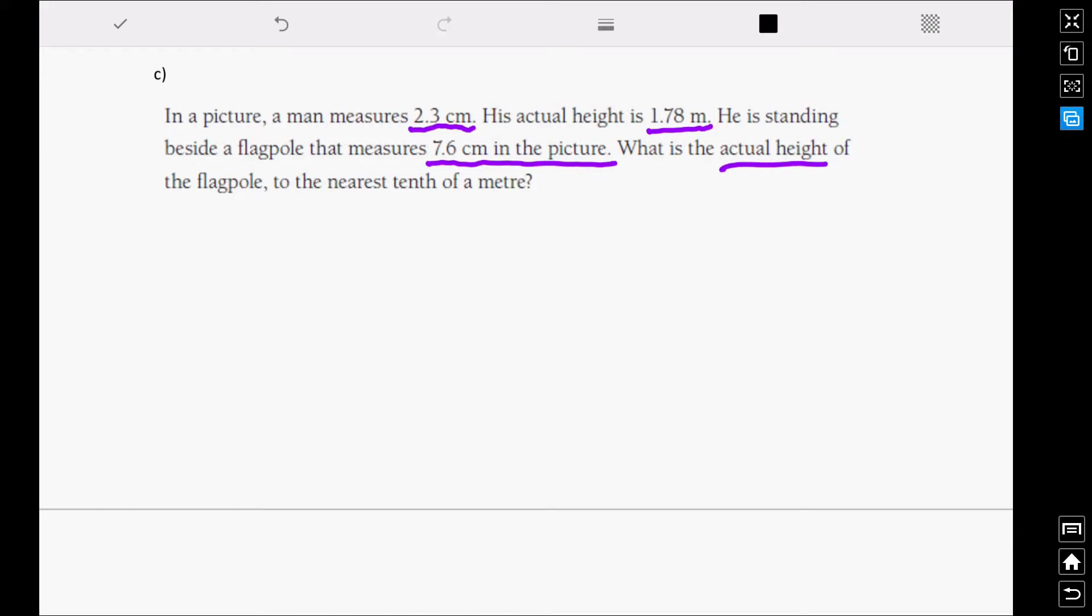Now, we could write a scale statement for this problem to help us solve it, but that's actually a step we can skip. And the reason we can skip that step is because the flagpole and the man are in the same picture. And we're going to assume that the picture doesn't move, doesn't get larger as we look at the flagpole compared to as we look at the man. So because the picture is exactly the same, the scale of the man is going to be the same as the scale statement for the flagpole. So this problem, we can just write as follows, and we don't even need to change the units for this because, again, same picture, same scale.